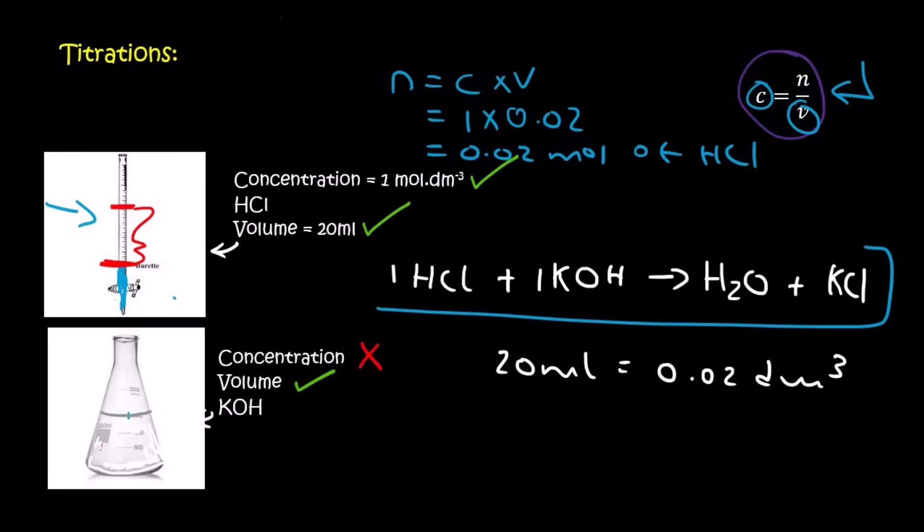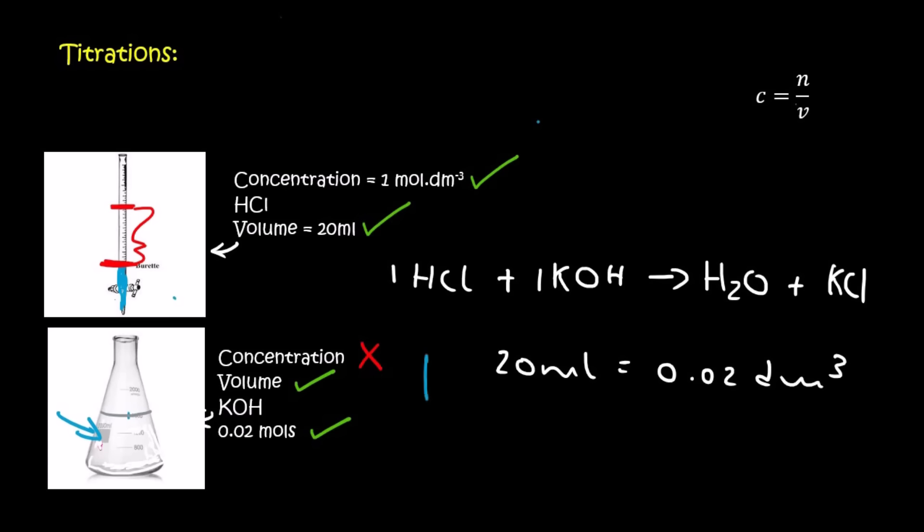Then you come down here to your equation and you look at the ratio of HCl and KOH. In this case it's 1 to 1 and so that means there must have been 0.02 moles of KOH. So now we have the moles of KOH. And so now if you look at the information that we have for KOH, we have its volume and we have its moles. Let's say that the original volume was 50 milliliters and so now we can use this formula again to find the concentration because the moles is 0.02.